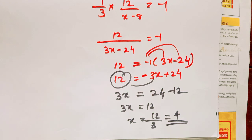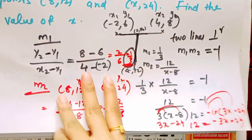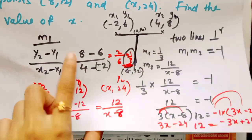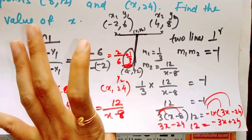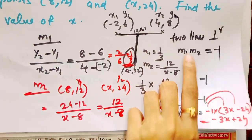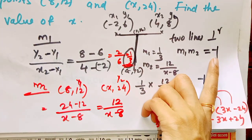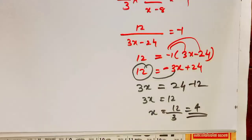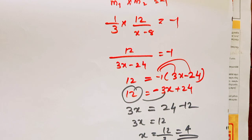So the answer is x equals 4. We used m1 and m2 with the equation. The slope formula is 1 by 3 and 12 by x minus 8, and m1 into m2 equals minus 1.